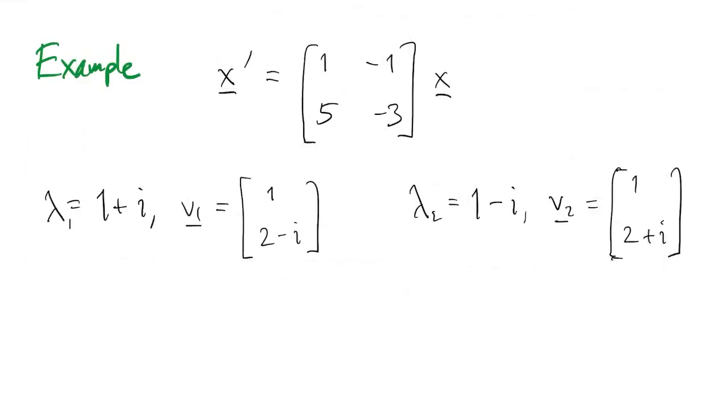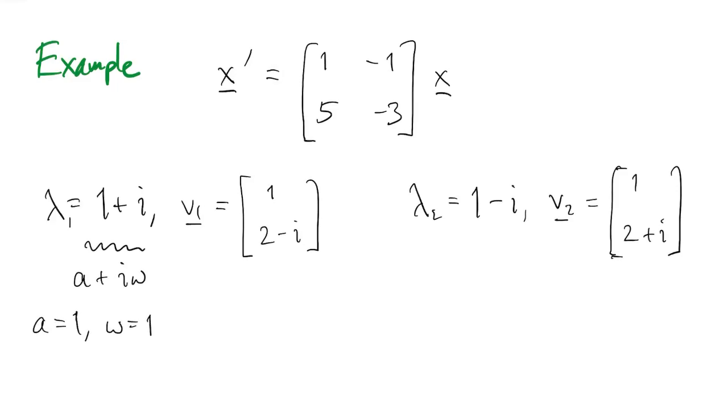Here's a real two-by-two system, and the eigenvalues and eigenvectors are complex. So we could just identify everything in our formulas. We could say, oh, well, a must be one, ω must be one, and here's the thing that defines the u and the z, and just plug all those things into the formula.